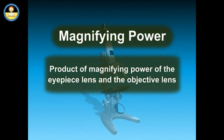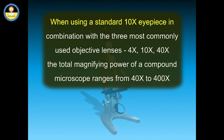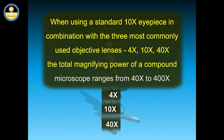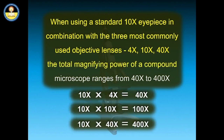Total magnification of a microscope is determined by the product of the magnifications of the two lenses — the eyepiece and the objective lens. When using a standard 10x eyepiece in combination with the three most commonly used objective lenses — 4x, 10x, and 40x — the total magnifying power of a compound microscope ranges from 40x to 400x.